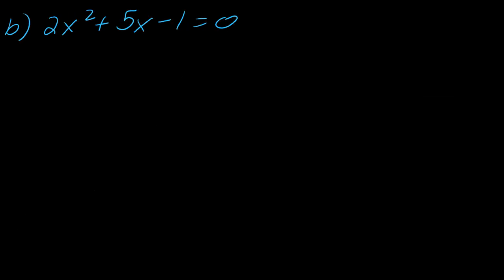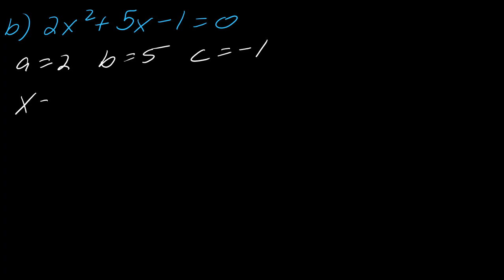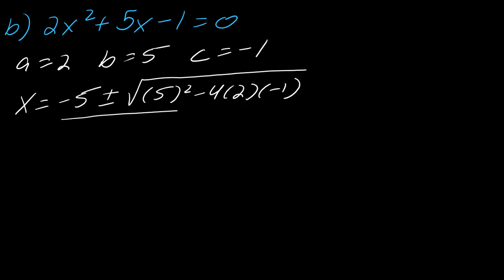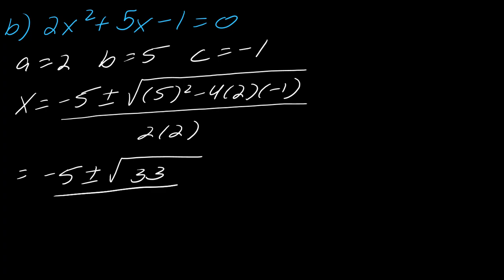For 2x squared plus 5x minus 1 equals 0, I cannot factor this. I don't want to use completing the square because dividing everything by 2 would create fractions, so we use the quadratic formula. My a is 2, my b is 5, and my c is negative 1. Don't forget to write x equals. This becomes negative 5 plus or minus the square root of 5 squared minus 4 times 2 times negative 1, over 2 times 2, which simplifies to negative 5 plus or minus the square root of 33, over 4.